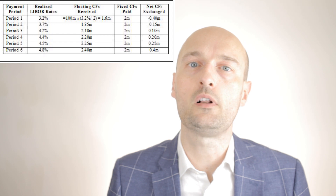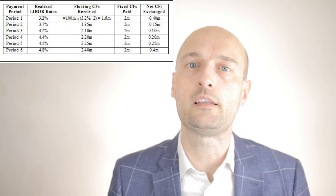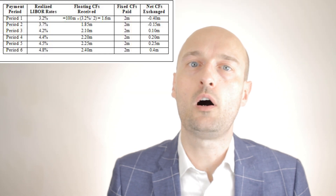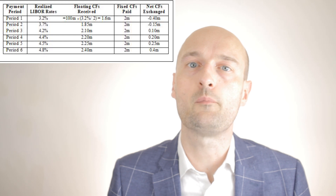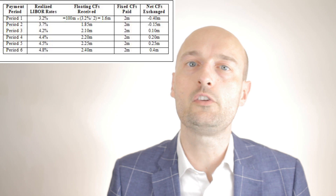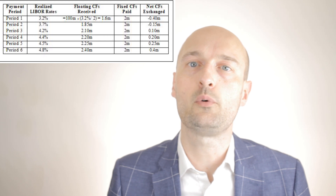After the three years have passed, a table on screen shows how the swap worked out. Note that the notional principle of $100 million does not change hands at any point — it would make no sense for them to wire each other an identical amount of money. It's just the figure upon which interest rate calculations are based. The interest rate swap allowed ABC to switch borrowing from floating to fixed believing rates would rise, and XYZ to switch from fixed to floating believing rates would fall.